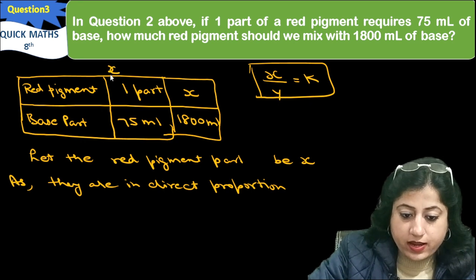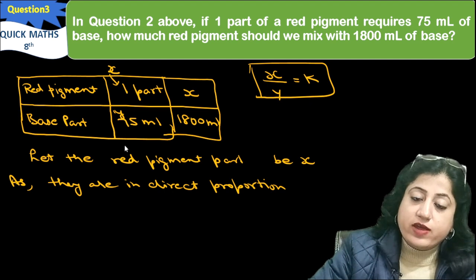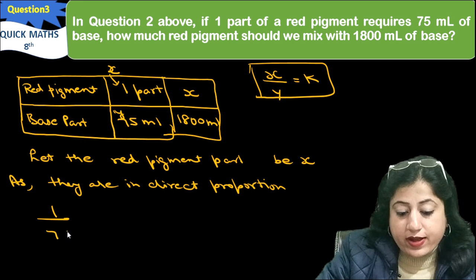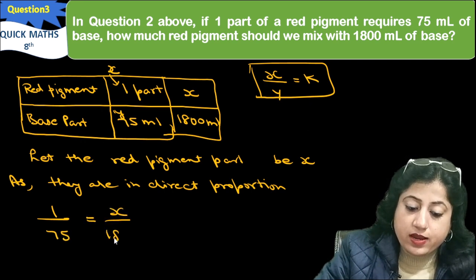If this is x, then what is y? x by y should be constant. So what do we do? What is x? 1 part. y is 75 ml. So if this is x, then what is 1800?